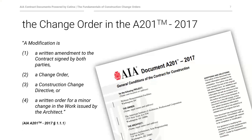How does the AIA A201 general conditions of the contract for construction address modifications to the contract? The term 'change order' is found 23 times in the 2017 version of the AIA A201. In its first paragraph, under the definition of the contract documents, the A201 outlines four means by which the contract may be modified: one, a written amendment to the contract; two, a change order; three, a construction change directive; and four, a written order for a minor change in the work, typically in the form of an architect's supplemental instructions, or ASI.